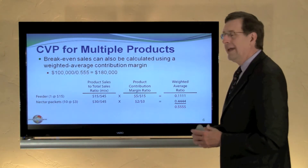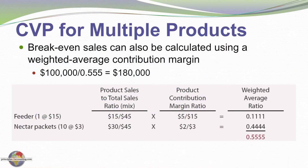In this case, the fixed cost of $100,000 divided by the 0.555 weighted average contribution margin ratio — and I'll show you how to calculate that in a moment — gives us break-even sales of $180,000. This is a shortcut way to calculate your break-even sales.